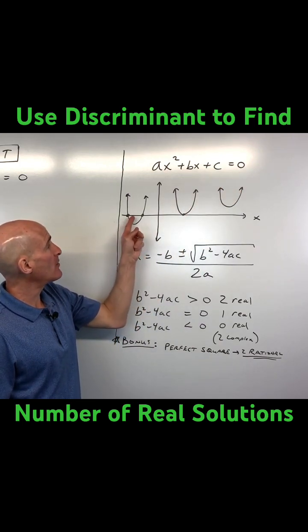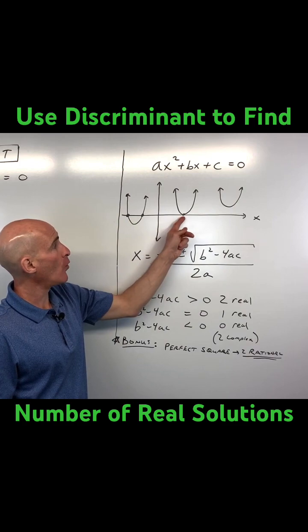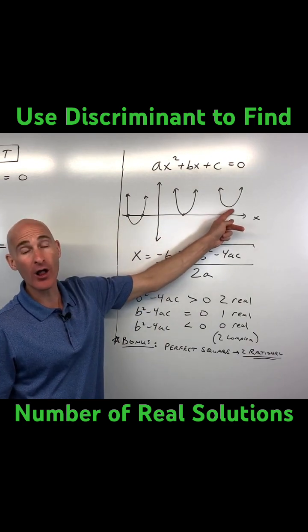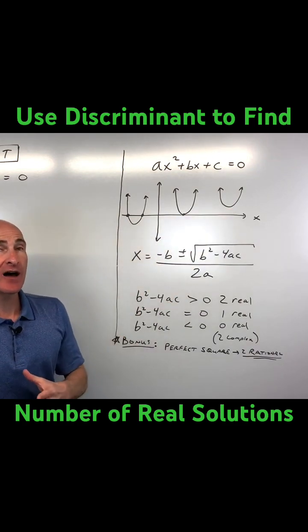You could have a parabola that crosses at two points on the x-axis, one point, or not at all. That's what the discriminant allows us to determine.